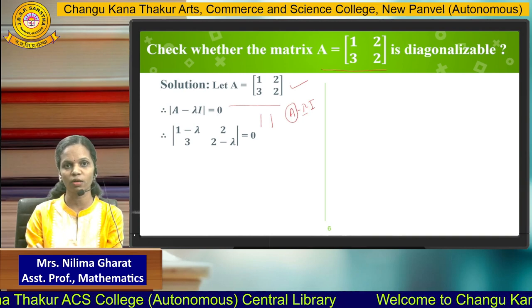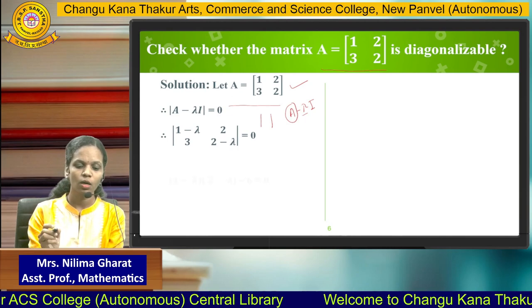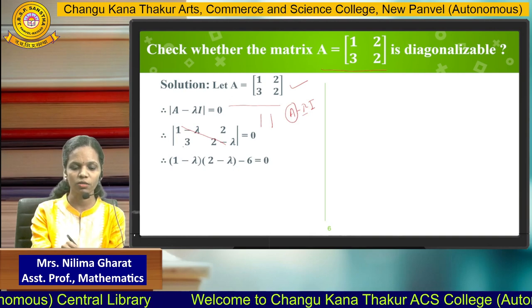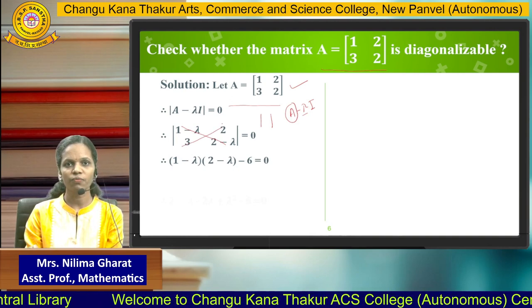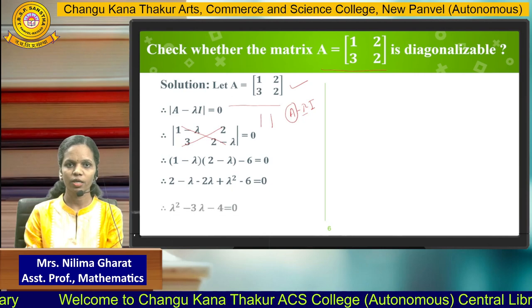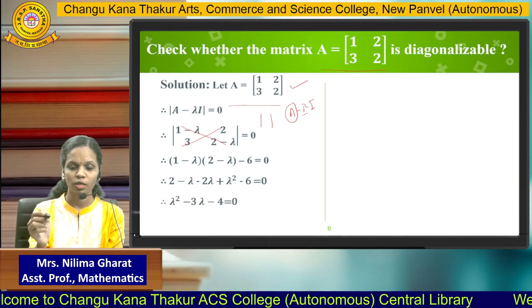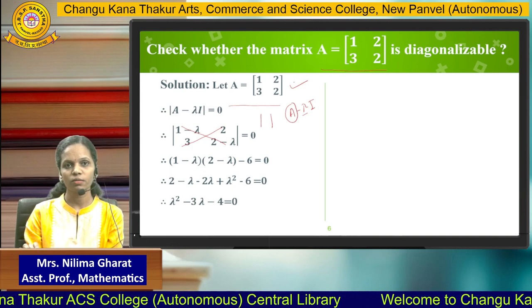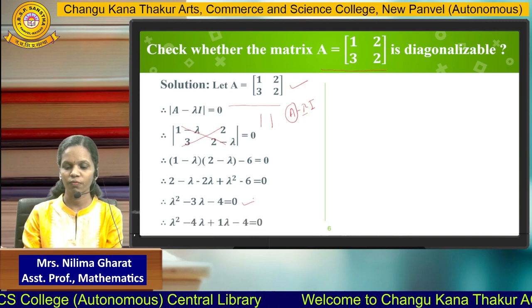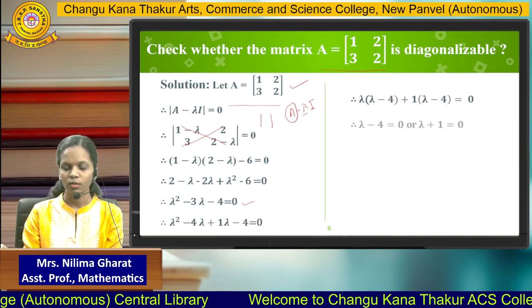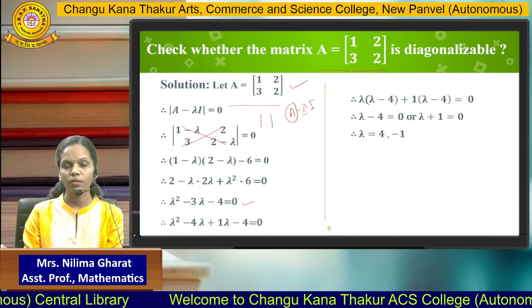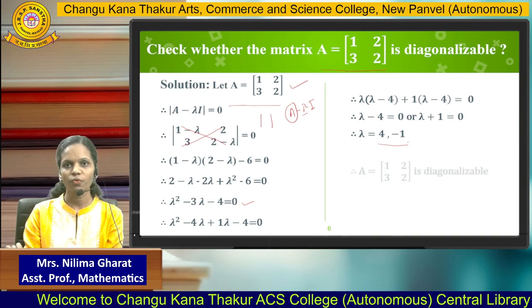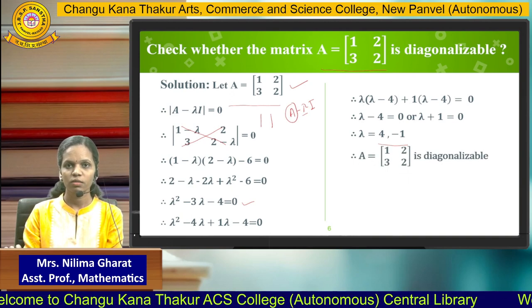As you know how to find the determinant, we get (1 minus lambda) into (2 minus lambda) minus 6 equal to 0. After simplifying we get the quadratic equation and we get the values of lambda, known as eigenvalues. Here lambda equals 4 and minus 1. All are distinct, therefore the given matrix is Diagonalizable.